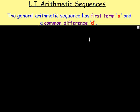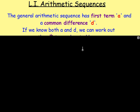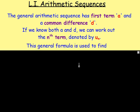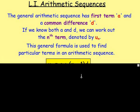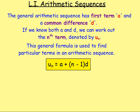The general arithmetic sequence has a first term, a, and a common difference, d. If you know both of them — if you know a and d — you can work out any term in the sequence: the nth term. That is written as u-n. This general formula is used to find particular terms in an arithmetic sequence, and that is: u-n equals a plus (n minus 1) times d.